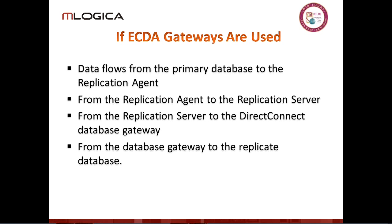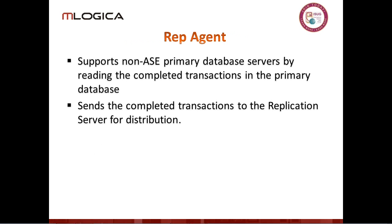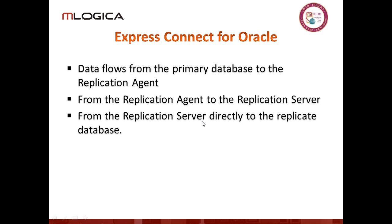If you have an Enterprise Connect system going, you can use the ECDA gateways. There are still customers using these to go back and forth through technologies. Data flows from the primary to the rep agent, from the rep agent to the rep server, from the rep server to the Direct Connect gateway, and then out to the replicate database. This gives you the ability to replicate out to a range of heterogeneous data sources. The rep agent supports non-ASE primary database servers by reading completed transactions and sending them to the rep server for distribution.